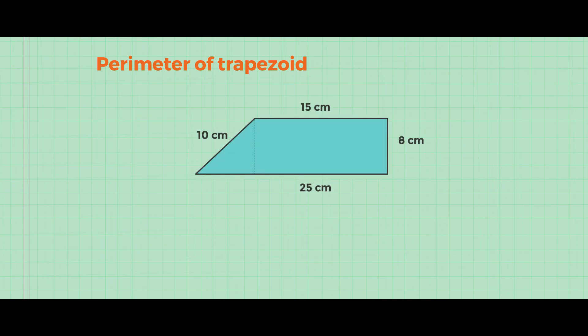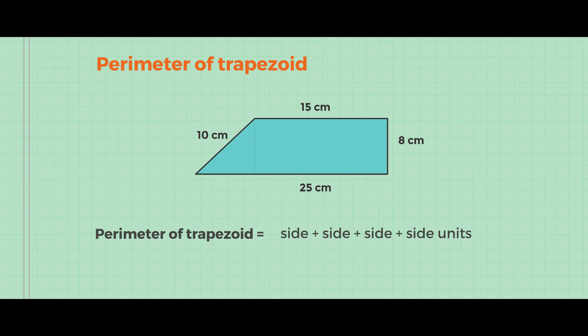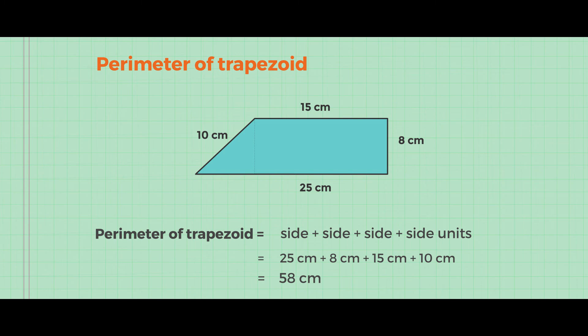Now, perimeter of a trapezoid. To calculate the perimeter, we add all sides together: side plus side plus side plus side, with units in millimetre or centimetre. In this diagram, we have 25 centimetre plus 8 centimetre plus 15 centimetre plus 10 centimetre, which equals 58 centimetre. That is the perimeter of this trapezoid.